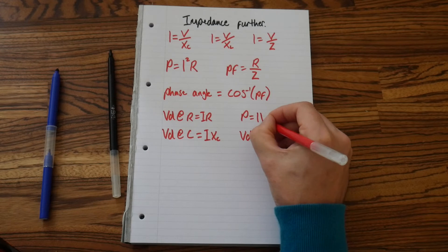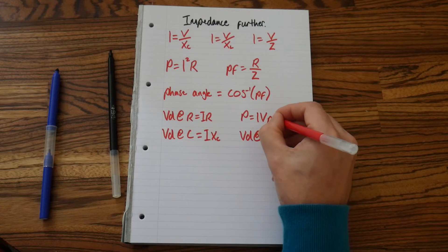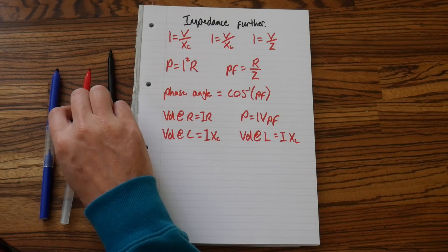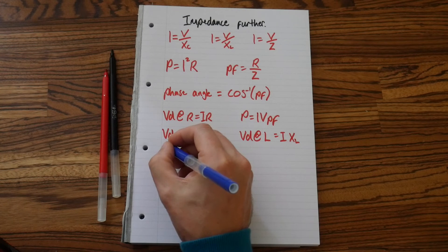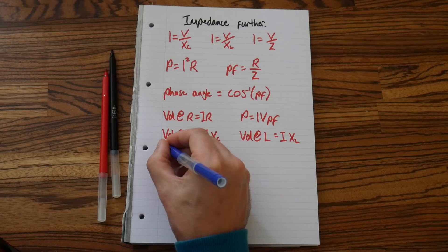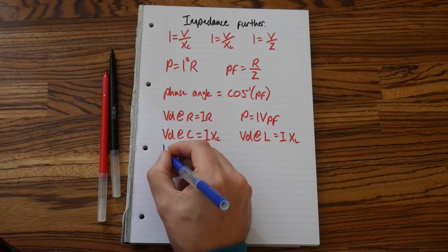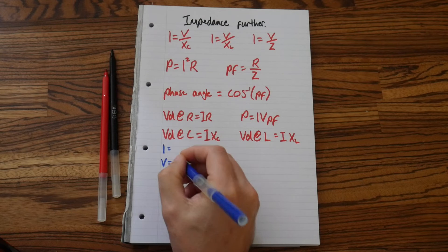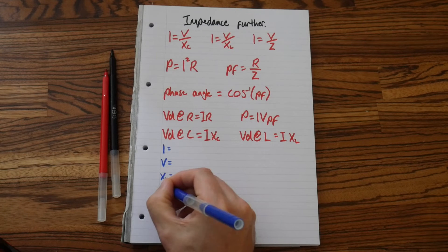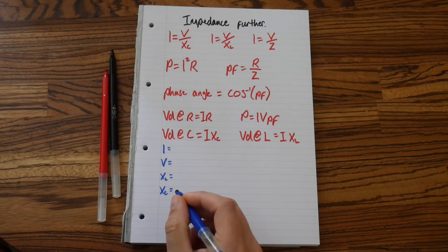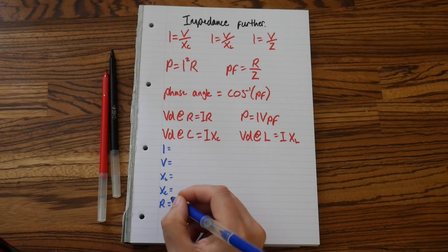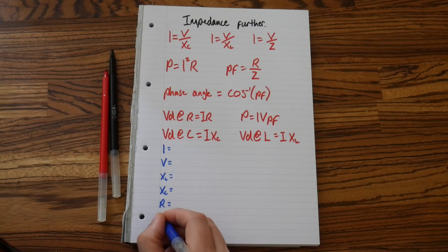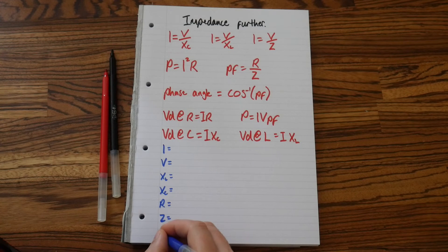We have volt drop times V times PF, another way to work out power. We've got lots of letters here, so I equals V, we've got XL, XC, and R, and Z, PF. I think that's all of them.